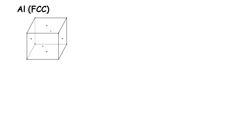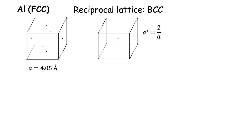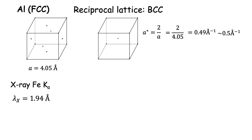Let us look at this through an example. Aluminium is face-centered cubic with a lattice parameter of 4.05 angstrom. The reciprocal lattice of aluminium is a body-centered cubic lattice with lattice parameter a* equal to 2/a, which turns out to be 0.5 angstrom inverse. If we use X-ray, say iron K-alpha, the wavelength is 1.94 angstrom, so the radius of Ewald's sphere is 0.5 angstrom inverse — equal to the lattice parameter of the reciprocal space.